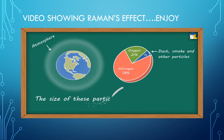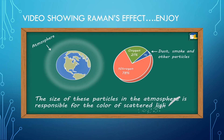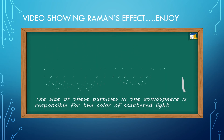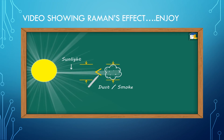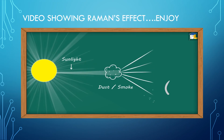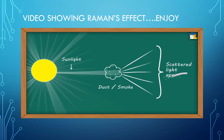The size of these particles in the atmosphere is responsible for the color of scattered light. When sunlight strikes particles of dust, smoke, etc., which are bigger than the wavelength of sunlight, all the colors of sunlight are equally scattered. As a result, the scattered light appears white.